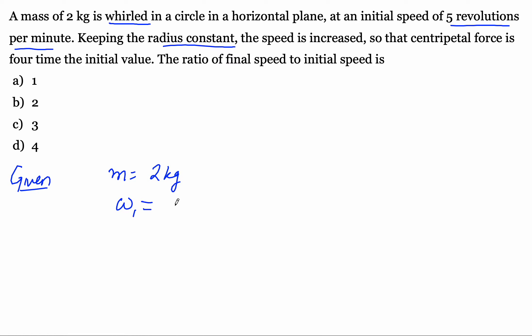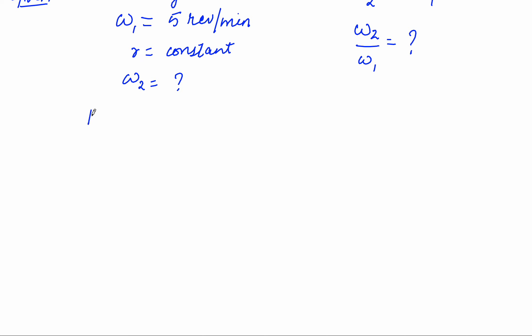The initial speed is given to us. In case of circular motion, they have given the speed in revolutions per minute, so it will be the angular speed omega. So omega 1, the initial angular speed, is 5 revolutions per minute. The next thing is the radius is constant — it is not going to change. They have increased the speed; let's say omega 2 is the increased speed.